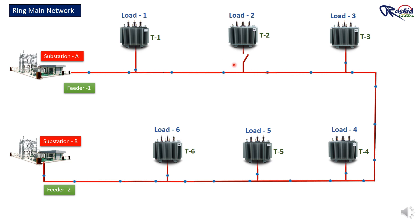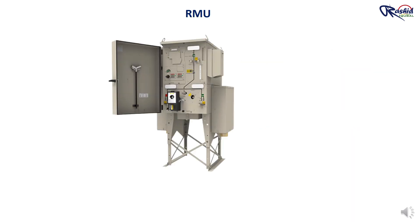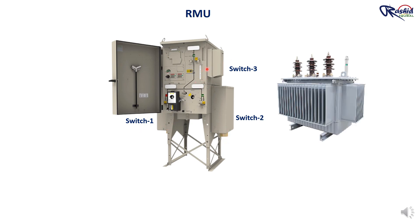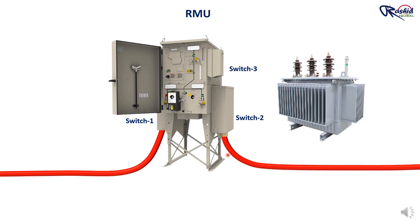Now, instead of installing these three switches separately, we can combine them into one switchgear called Ring Main Unit. In this setup, I have combined different switches into one unit — Switch 1, Switch 2, and a circuit breaker, all in one, which we call RMU, that is Ring Main Unit. Switch 1 brings in the power, Switch 2 passes power to the next RMU or feeder, and the third switch is the circuit breaker that connects to and protects the transformer.